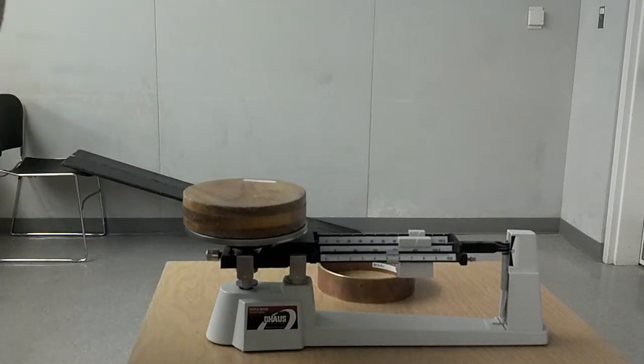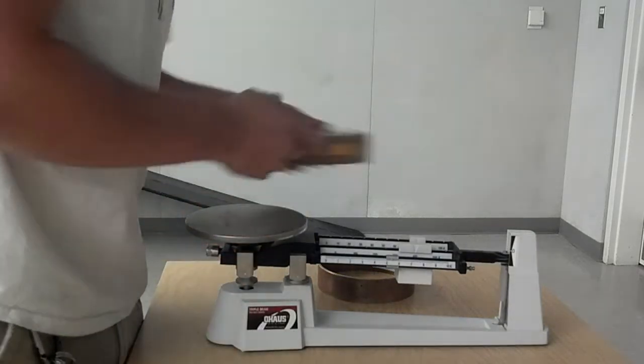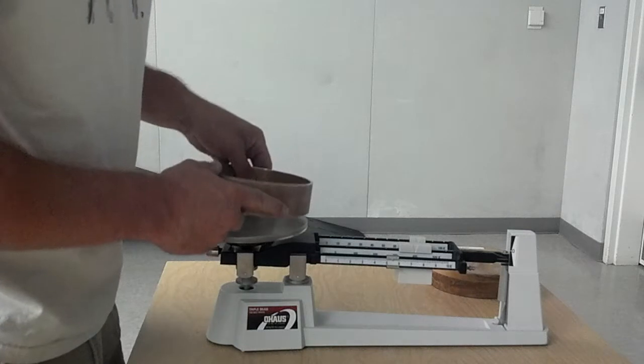Let's see, the wooden wheel is approximately 485 grams.